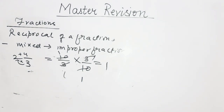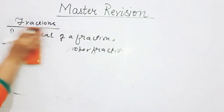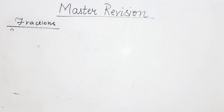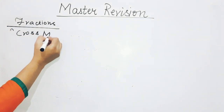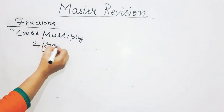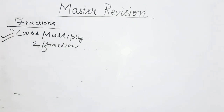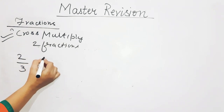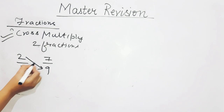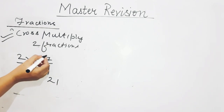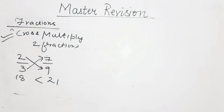How do we compare fractions? First method: cross multiplication — useful when comparing exactly 2 fractions. For example, comparing 2 by 3 and 7 by 9: cross multiply — 2×9=18, 3×7=21. Since 21 is greater, 7 upon 9 is greater than 2 by 3. Second method: take the LCM of the denominators.